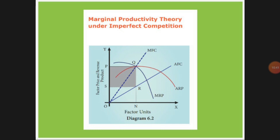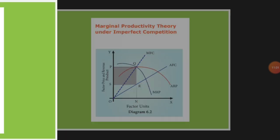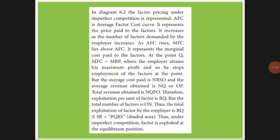Here, NR×SO represents the cost — the expenses — and NQ×PO is the revenue, which is the income. The total exploitation is RQ multiplied by SR, which is equal to PQ, represented by the shaded area in the diagram.